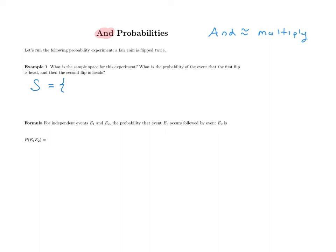I'll call it S is equal to — if you flip a coin twice, you could get heads and heads, heads and tails, tails and heads. Notice that these will be treated as different because there's a first and a second flip. And then lastly, tails for both. In the sample space, these are the only possible outcomes and the number of those things is four. Each combination like heads-heads is one single event, since running the experiment means you flipped the coin twice.